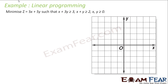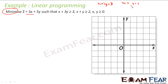We need to minimize this objective function such that these are the constraints. Let's draw x plus 3y is equal to 3. That is: when x is equal to 0, y is equal to 1; and when y is equal to 0, x is equal to 3. So let's plot these points and draw a line using them.